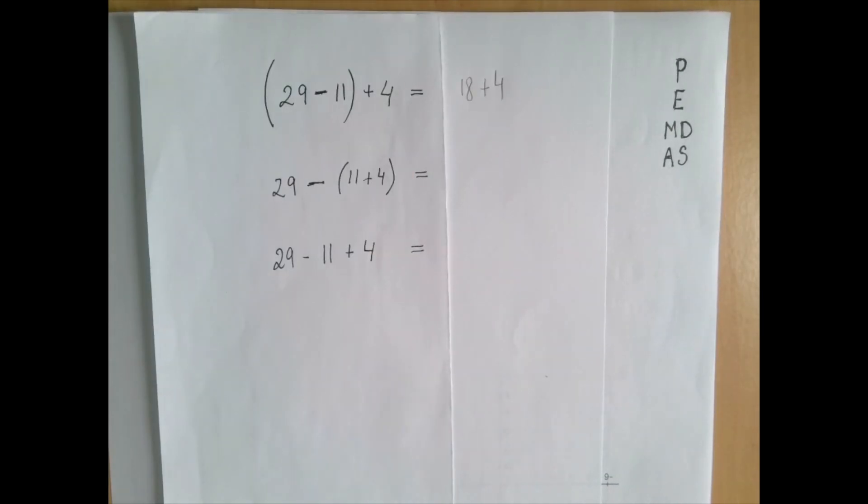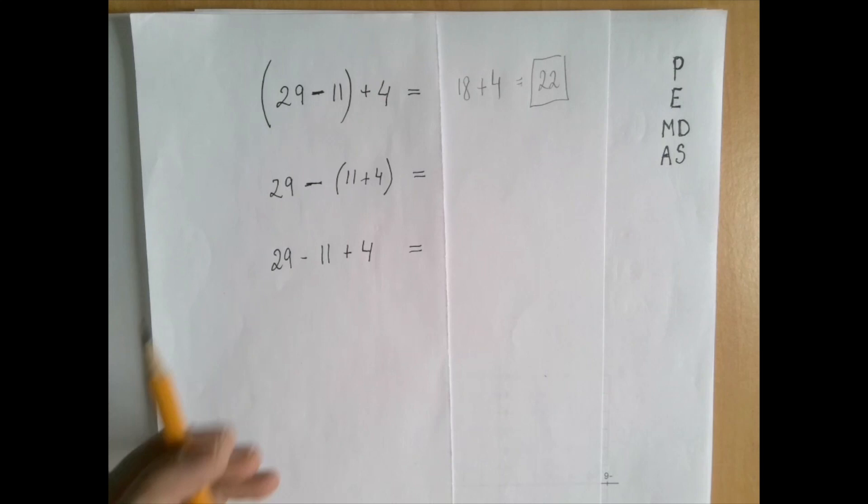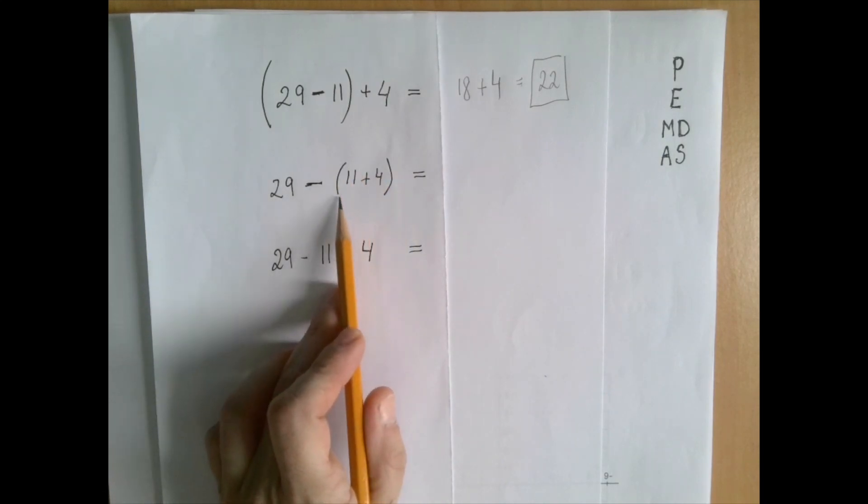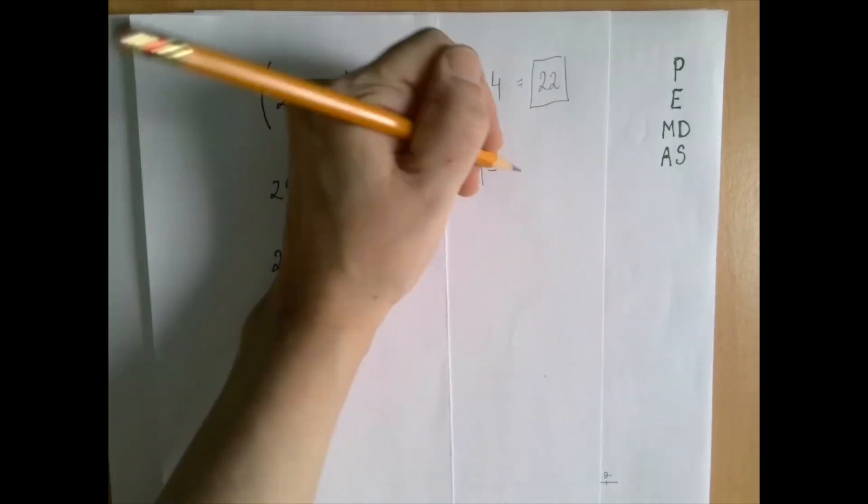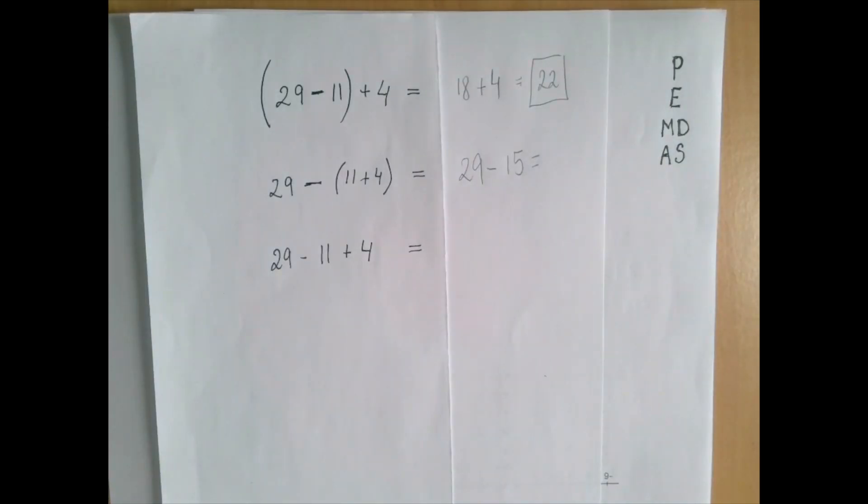In the second case, again the parenthesis makes it very clear. 11 plus 4 is 15, so we're talking about 29 minus 15, which is 14.